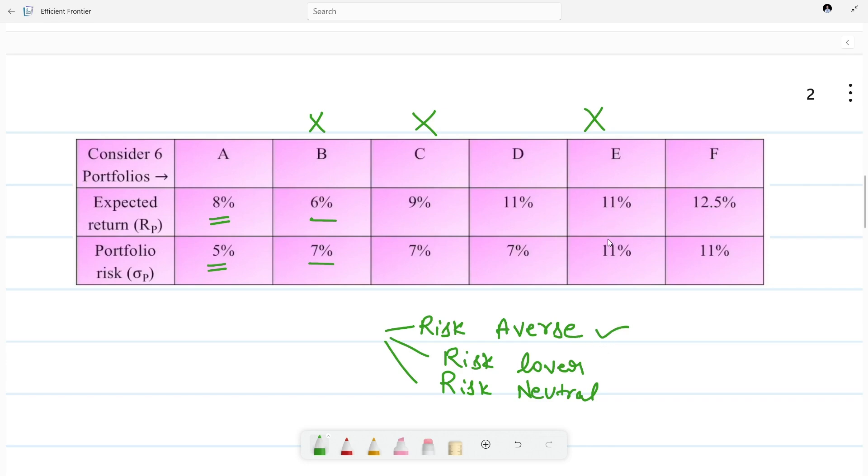Again, for the same level of risk, portfolio F is giving me higher return, hence I won't be preferring E. So we can conclude only A, D, and F portfolios are efficient.